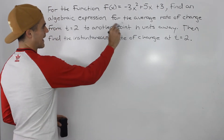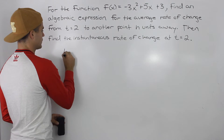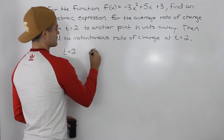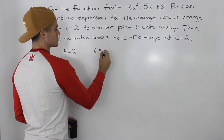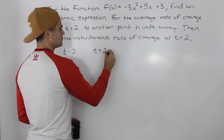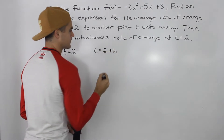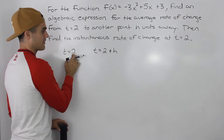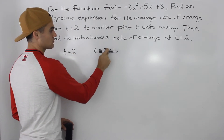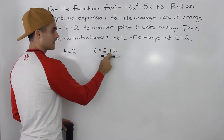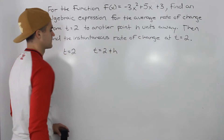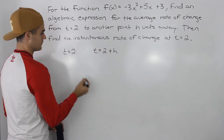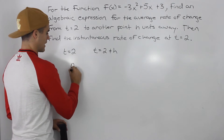Notice how we're finding the average rate of change from this t value of 2 to another t value that is h units away, so it would be like 2 plus h. So at this t value of 2 and then at this t value 2 plus h units away. We have to find the average rate of change on this interval.